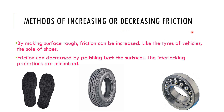Methods of increasing or decreasing friction: by making the surface rough, friction can be increased — like the tires of vehicles, the soles of shoes, etc. We can see that the surface area of soles and tires is rough, which is why friction is increased. Friction can be decreased by polishing both surfaces, which minimizes the interlocking projections. Ball bearings use rolling friction, which is less than sliding friction. In rotating machinery, shafts are fixed on ball bearings so that friction can be reduced considerably. Lubricants are also applied on two surfaces so that friction can be decreased.